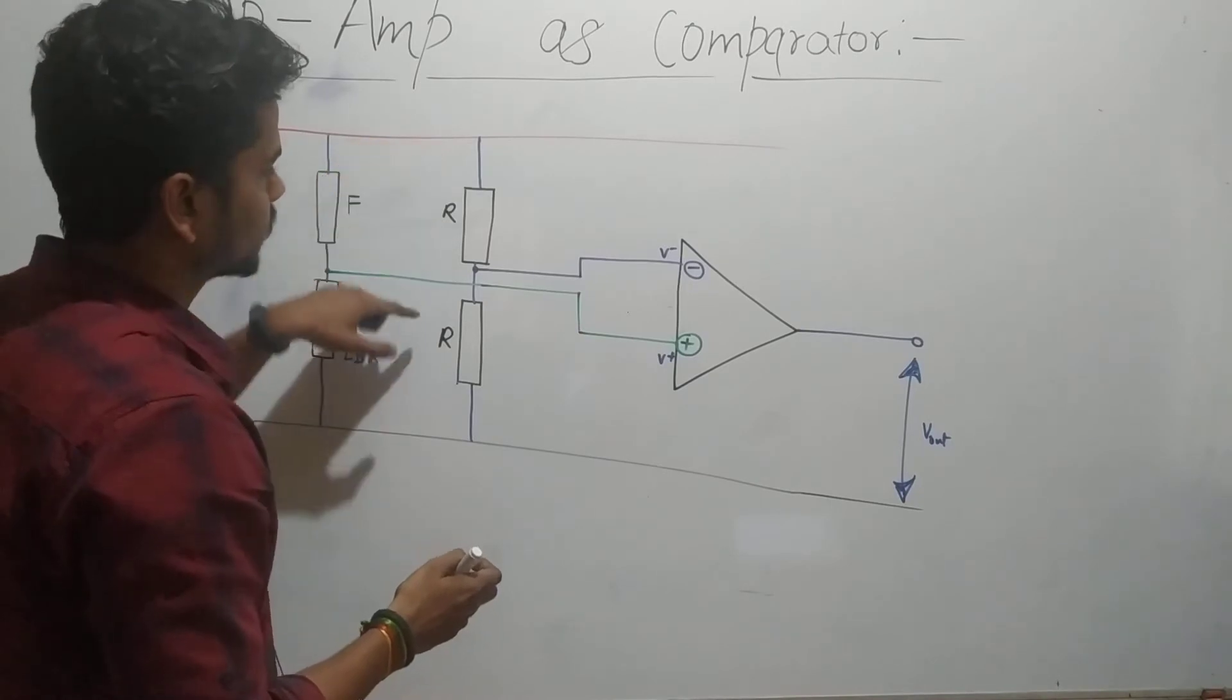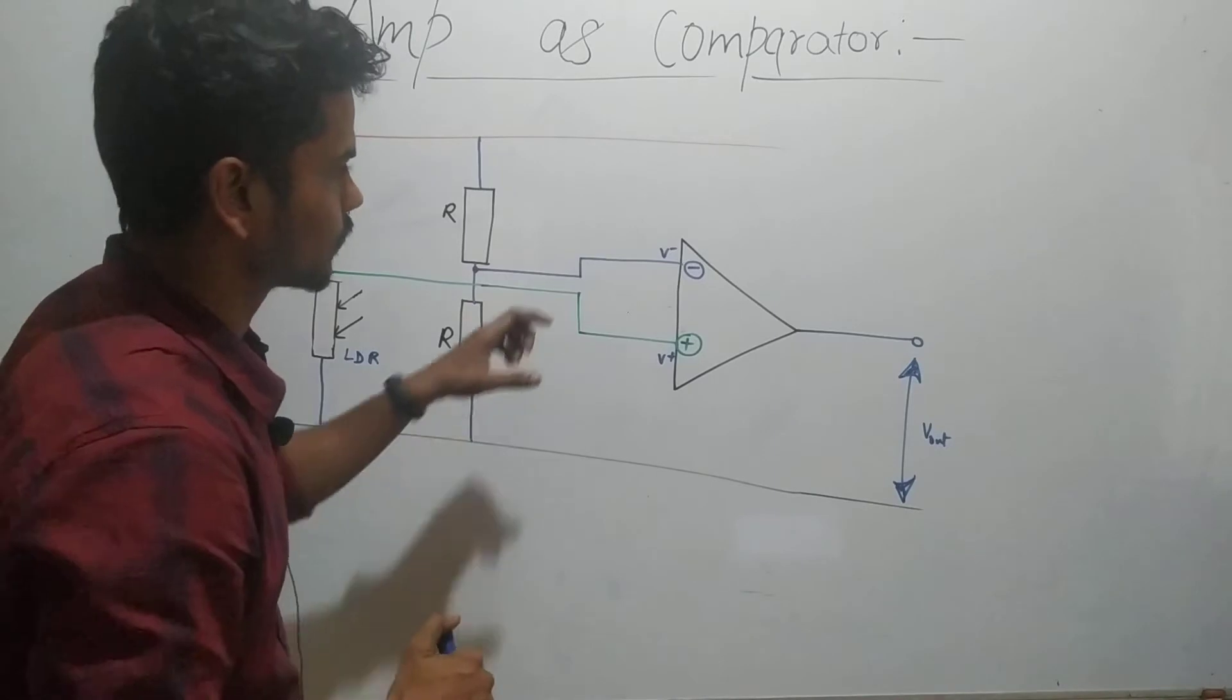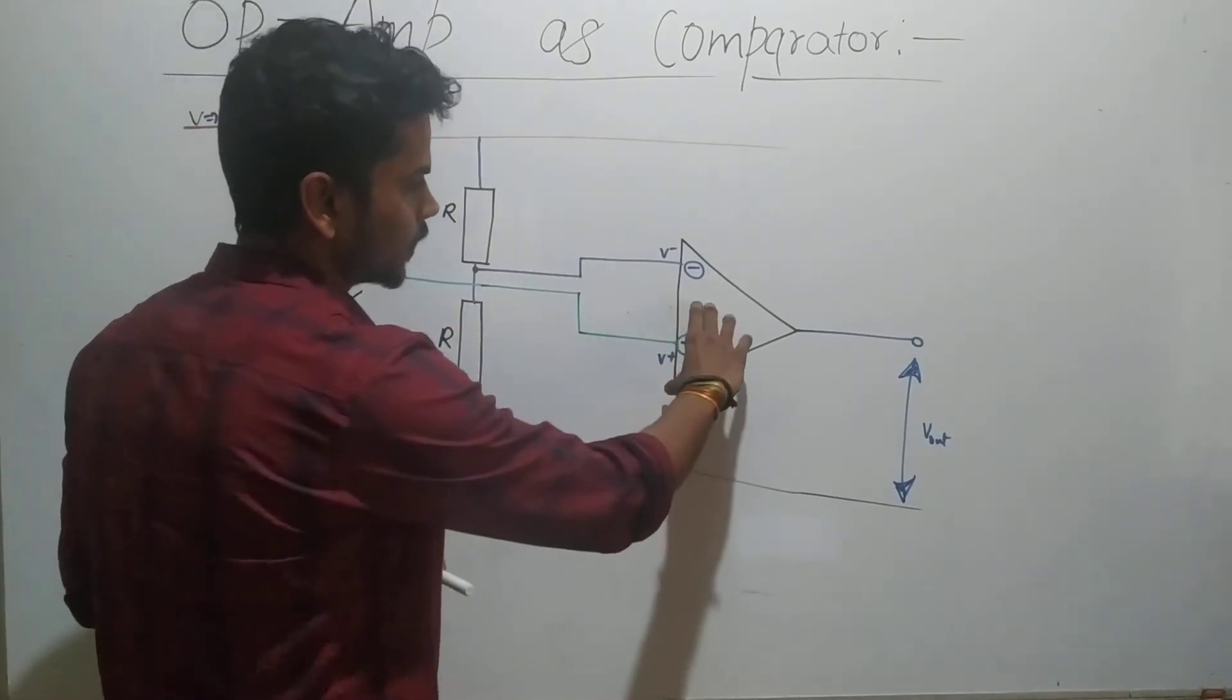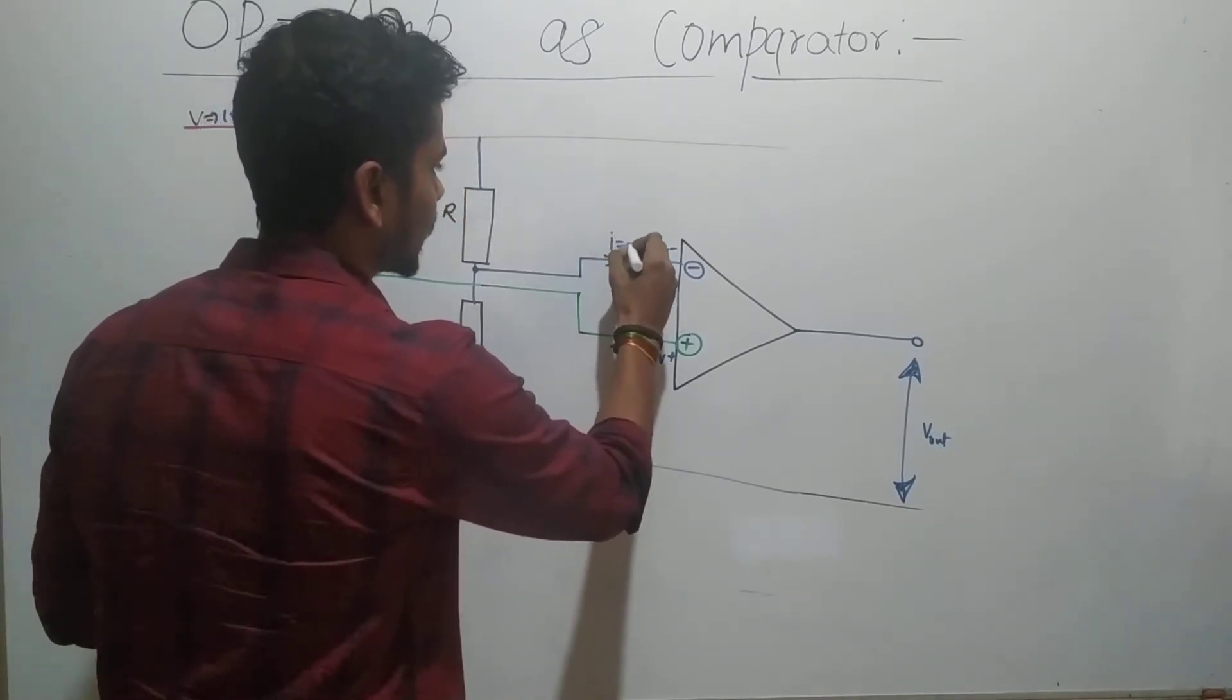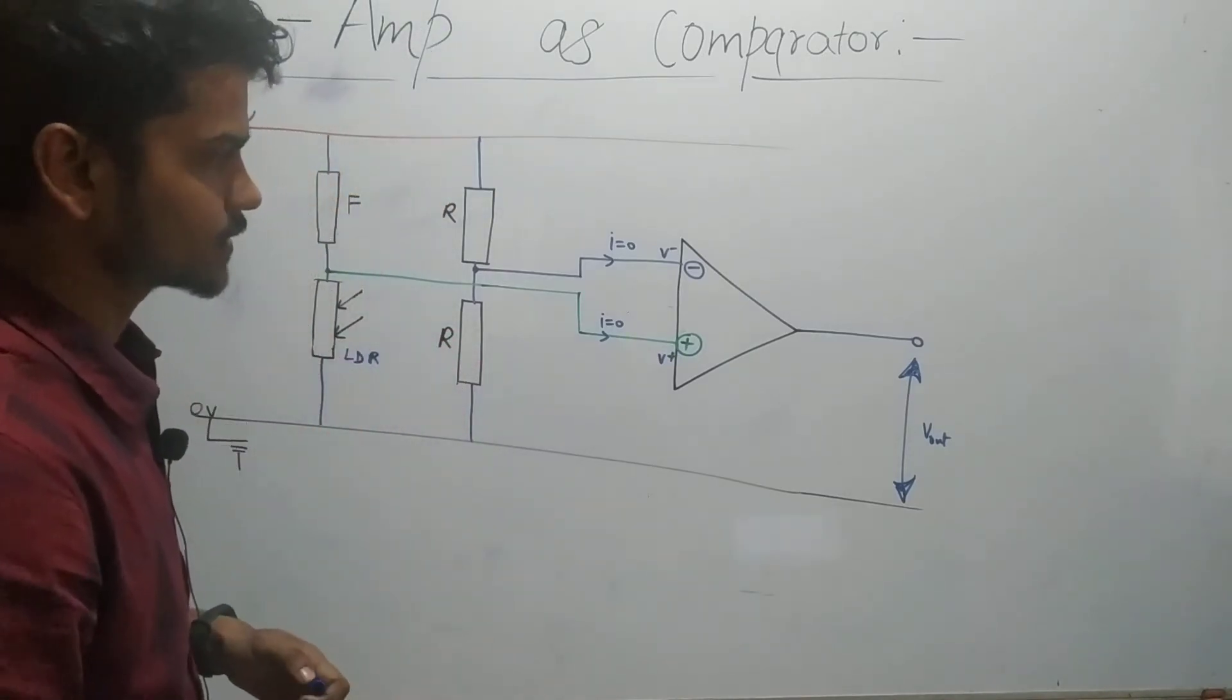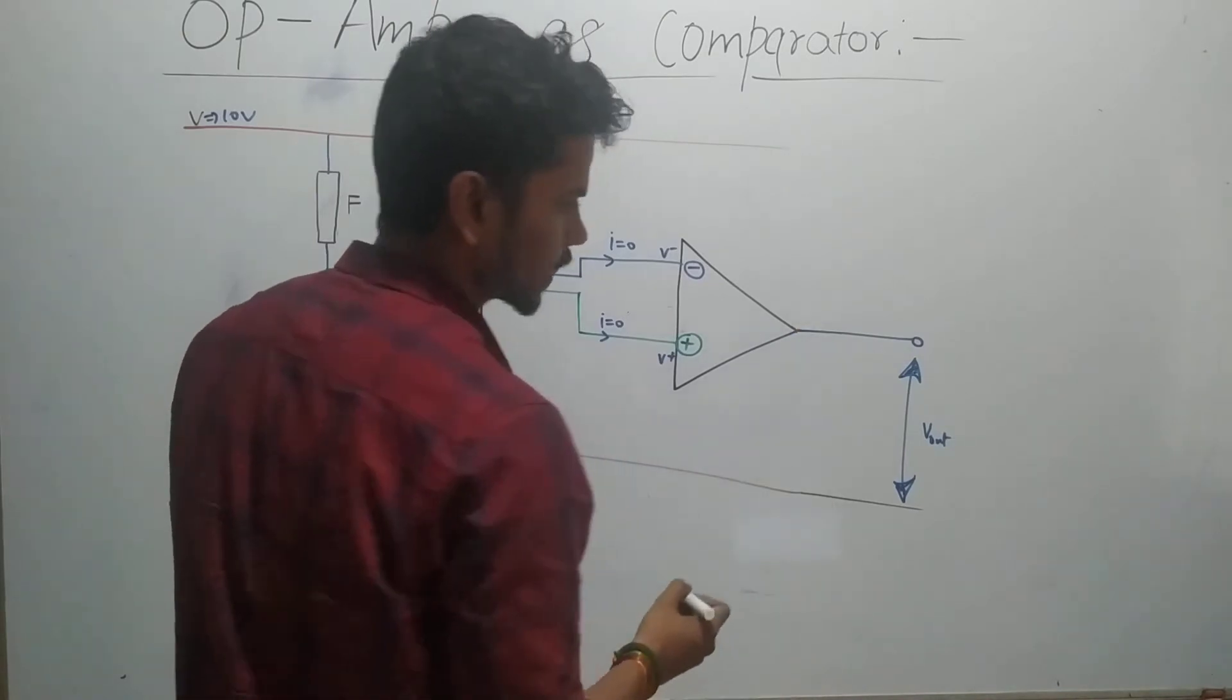We are using an ideal op-amp, so we're applying the same conditions from the properties. Ideal op-amp always has infinite input impedance, so no current passes through these two inputs. Secondly, output resistance is zero, so whatever voltage you get, you get it without any loss.